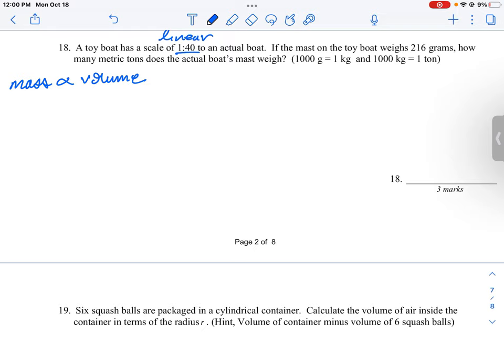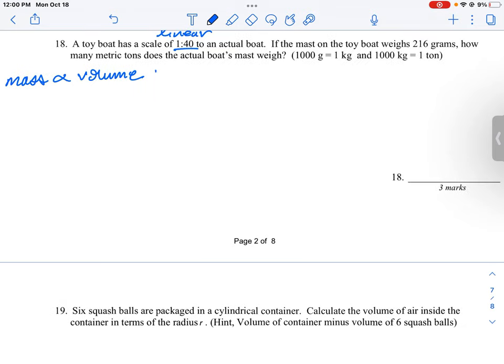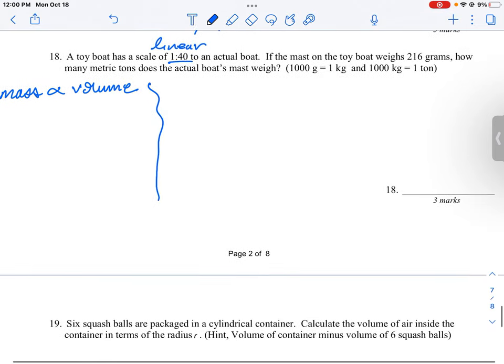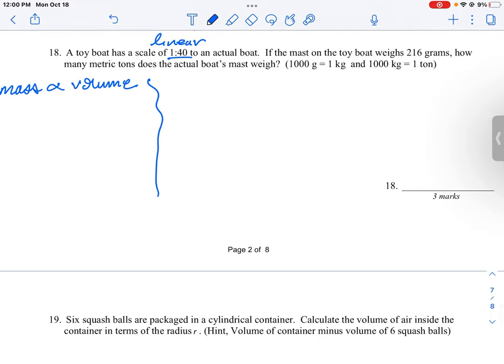to a volume measurement and then converting that into mass. So we can do this here on the side. We know that the ratio of the actual boat here is 1 to 40.